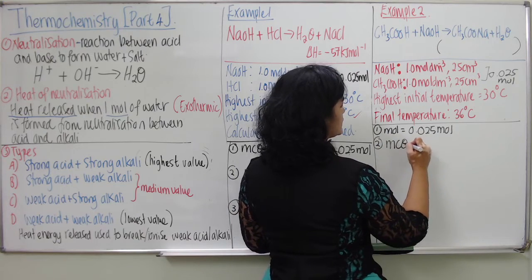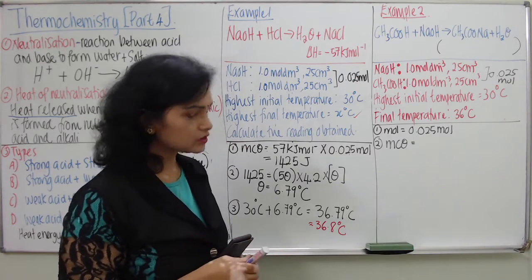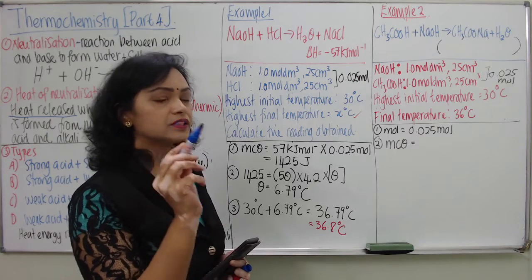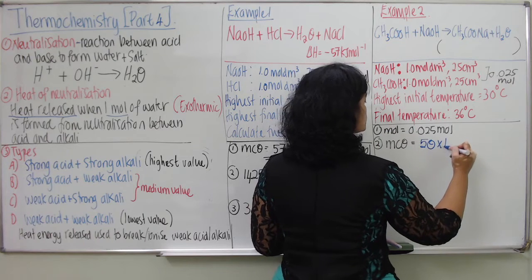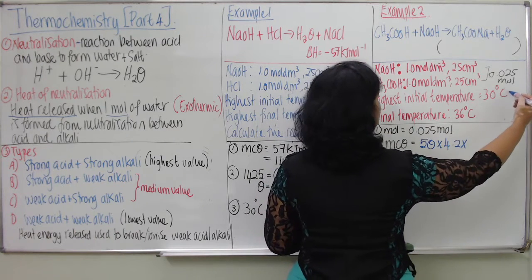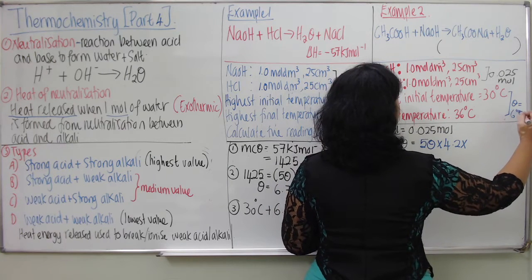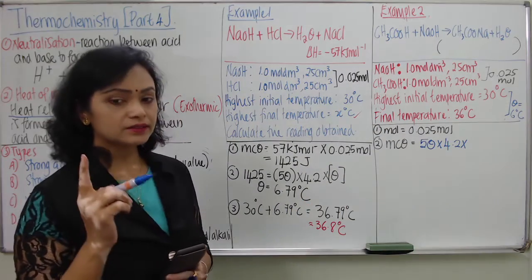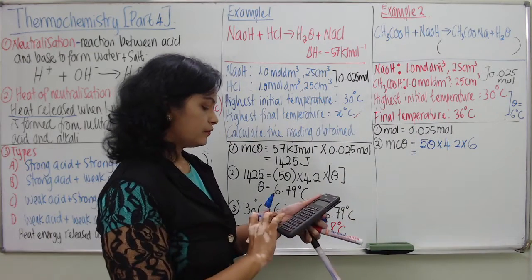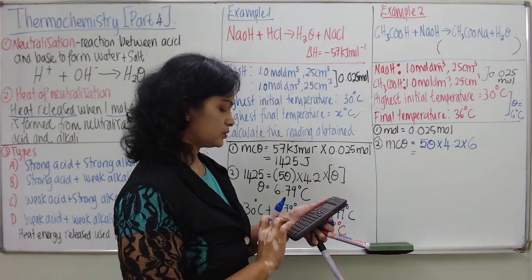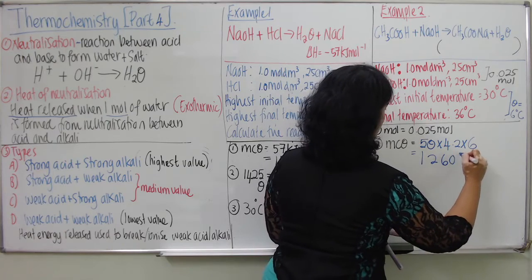Step 2: mcΔθ. Both solutions are mixed to produce 50 cm³ of volume, so mass = 50 g. Thus mcΔθ = 50 × 4.2 × Δθ. The change in temperature Δθ = 36 − 30 = 6°C. So mcΔθ = 50 × 4.2 × 6 = 1260 joules.